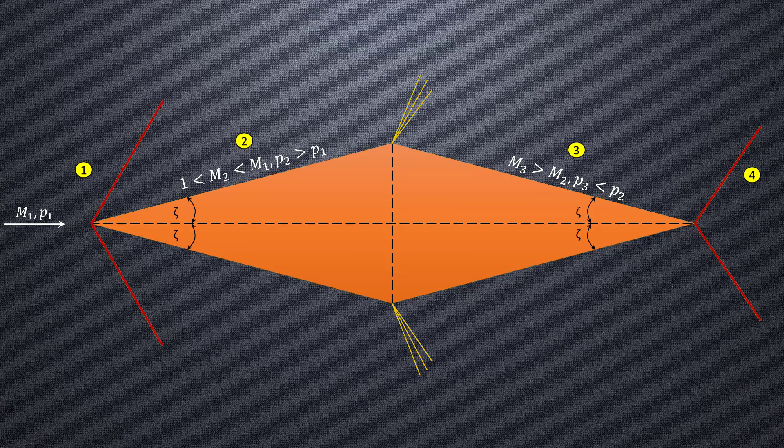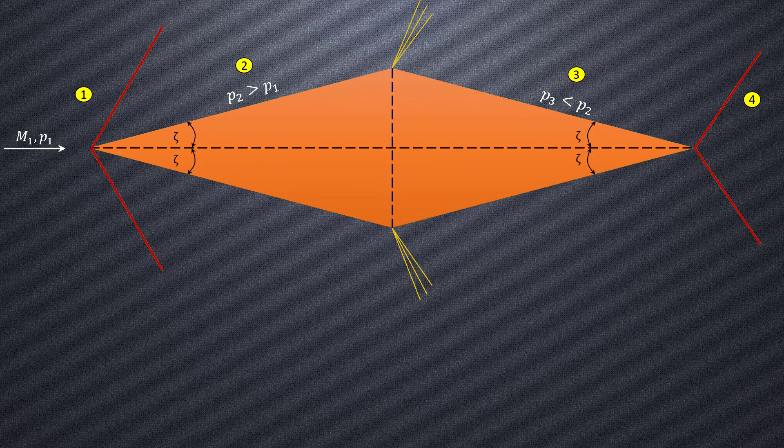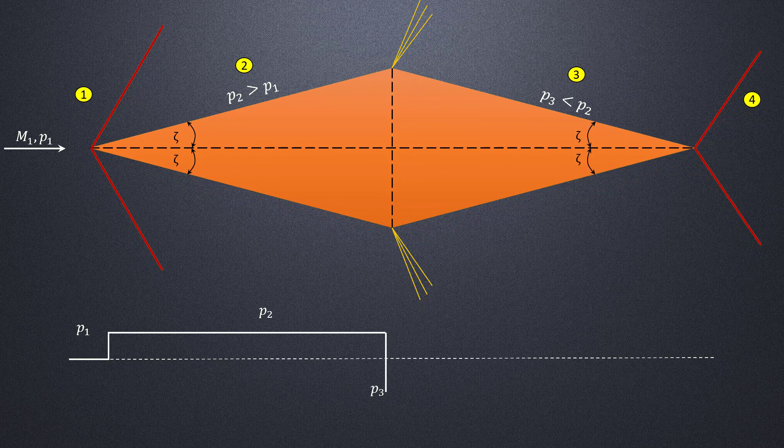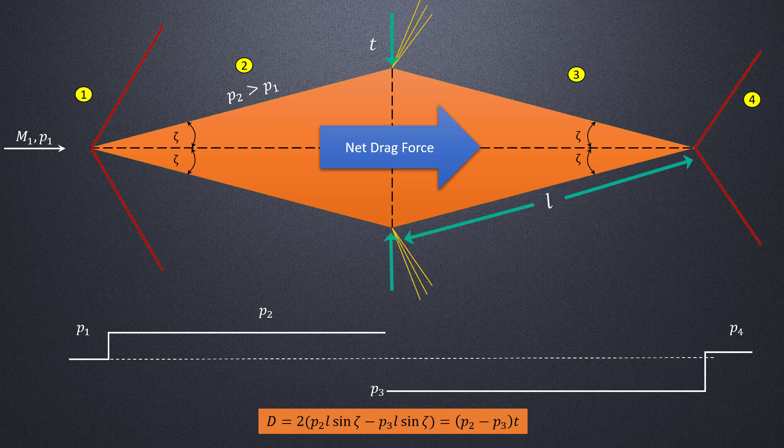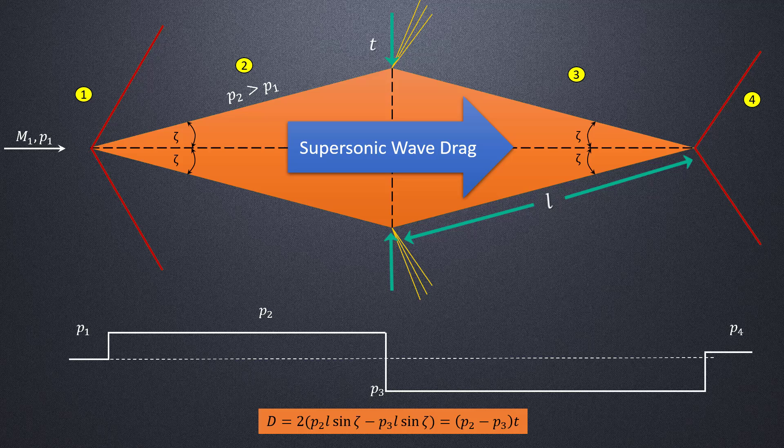The variation of pressure in these different regions is shown in this illustration. Since P2 is greater than P3, a net drag force will act on the airfoil, which can be estimated using the following equation. This drag is due to the pressure changes created by the presence of shock and expansion waves, and is therefore referred to as the supersonic wave drag.